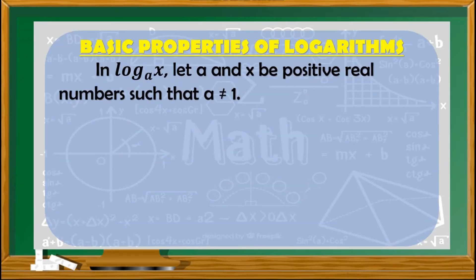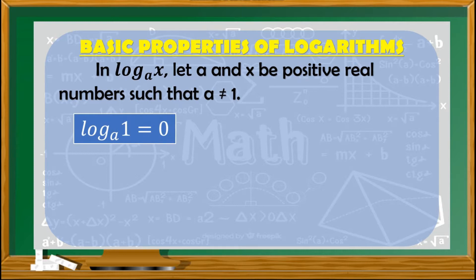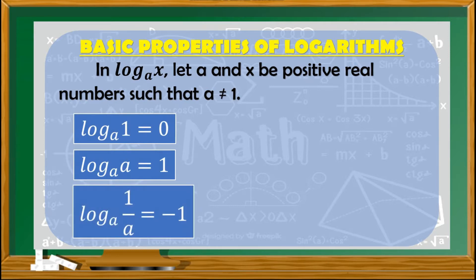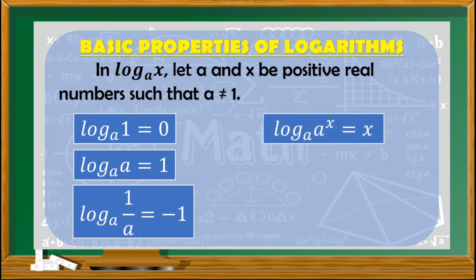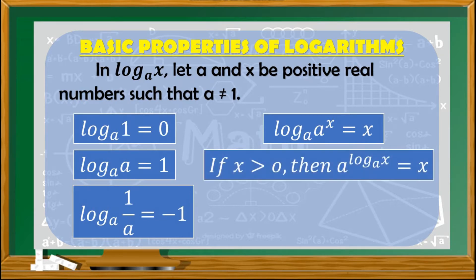What are the basic properties of logarithms? In logarithm x with base a, let a and x be positive real numbers such that a is not equal to 1. We have: logarithm of 1 with base a equals 0; logarithm of a with base a equals 1; logarithm of 1 over a with base a equals negative 1; logarithm of a raised to x with base a equals x; and if x is greater than 0, then a raised to the logarithm of x with base a equals x.